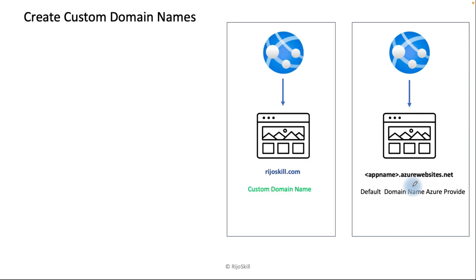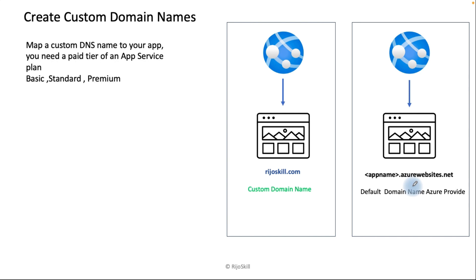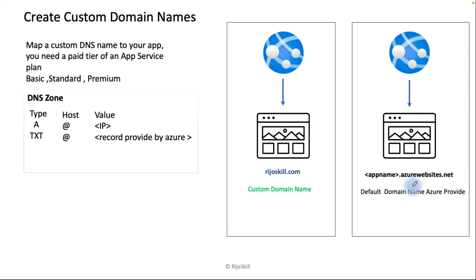First we need to check which app service plan supports adding a custom domain. The free app service plan does not support adding a custom domain — only Basic, Standard, and Premium plans support it. After upgrading your plan, you add your custom domain and Azure will provide a DNS record. You then take that DNS record and paste it into your DNS zone at your domain hosting provider, such as GoDaddy, and update your DNS record there.